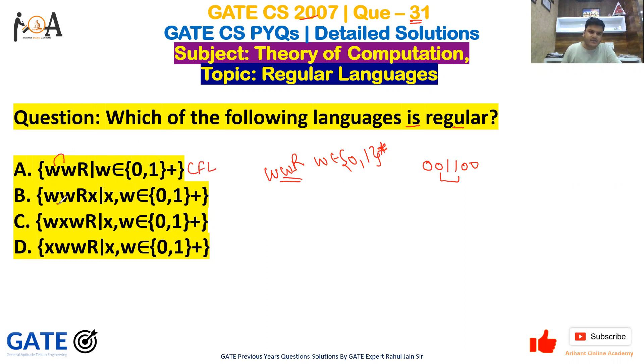Similarly, if you scan option B, {wwRx | w,x∈{0,1}+}, here itself this is a part of CFL and x can be a combination of any 0,1. Again, comparison is required and for comparison we require infinite stack because {0,1}+ positive closure is there, so infinite time we need comparison. So it is also context-free language.